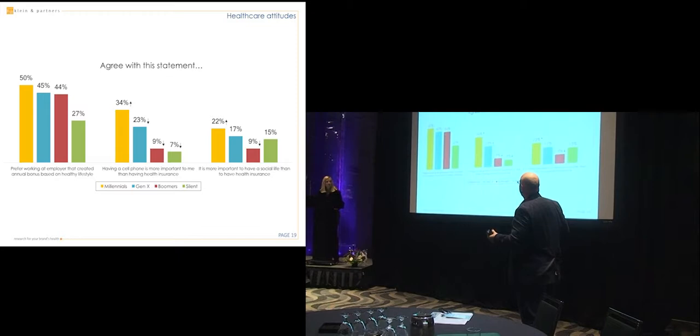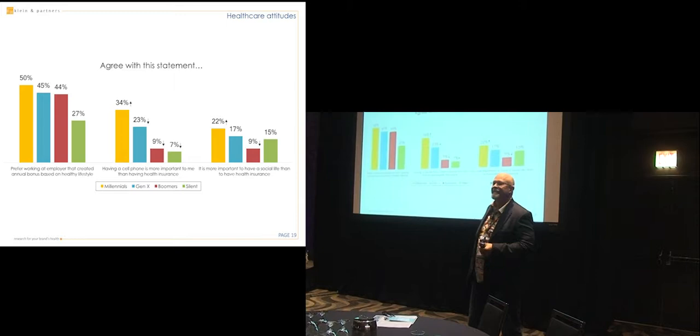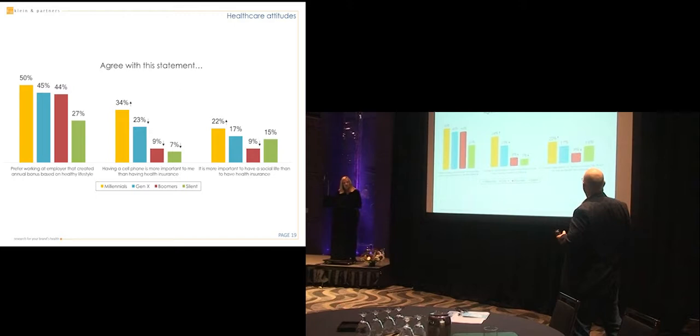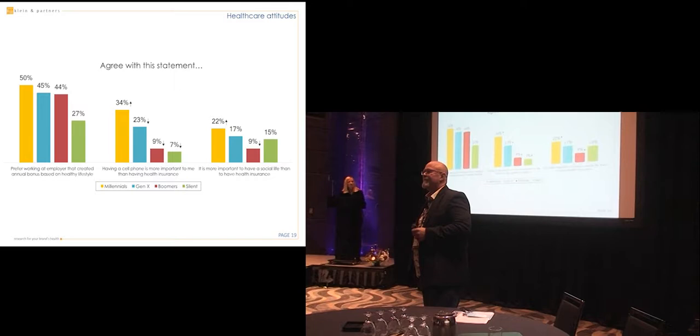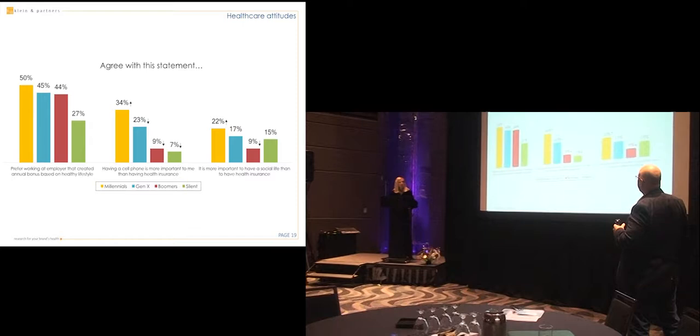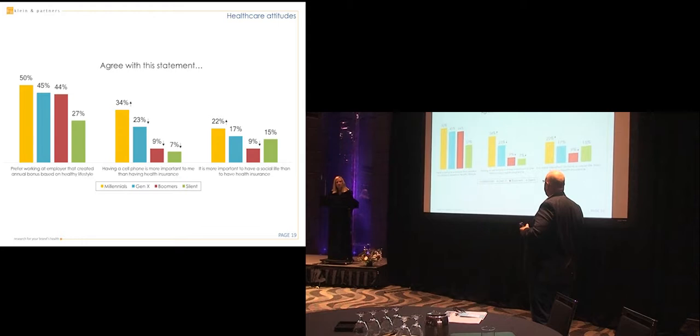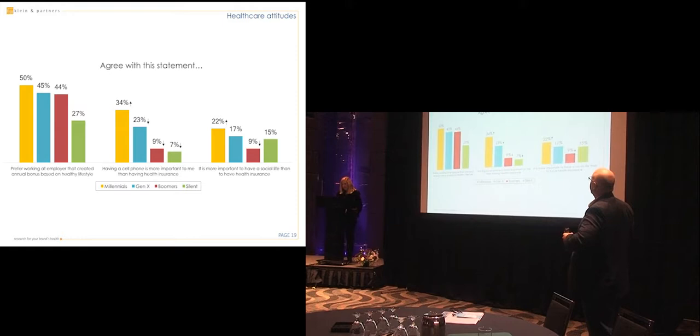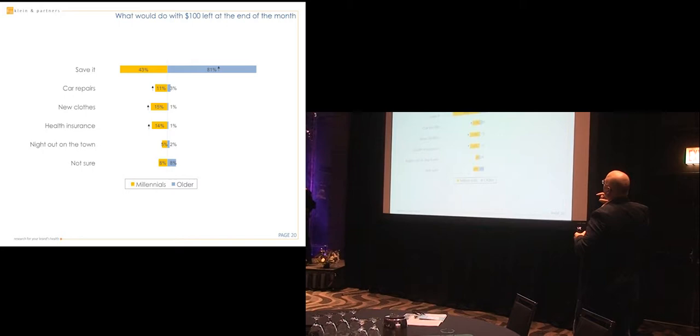Agree with this statement. Having a cell phone is more important to me than having health insurance. Significantly higher for millennials. It's more important to have a social life than health insurance. Health insurance is just not that big a deal for millennials. How do we interact with that type of a mindset? And then I prefer working at an employer that create an annual bonus based on a healthy lifestyle. Well, pretty much everybody working likes that idea. Next. All right. This is a fun one. I've never asked this before. What would you do with 100 bucks left at the end of the month? Older folks, almost all of them said save it.